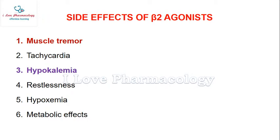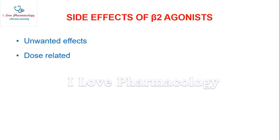The side effects caused by beta-2 agonists are muscle tremors, tachycardia, hypokalemia, restlessness, hypoxemia, and metabolic effects. We will see how each individual side effect occurs with beta-2 agonists.